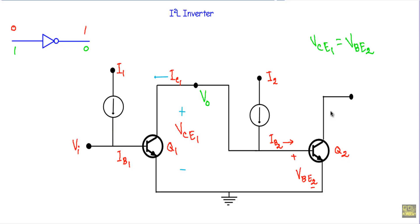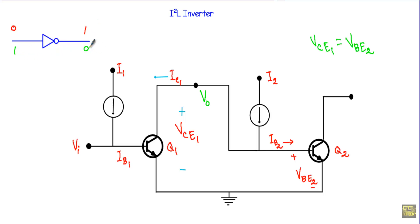In this video I will show you the operation of an I²L (integrated injection logic) inverter gate. If at the input I apply logic 0, at the output I will get logic 1. If at the input I apply logic 1, at the output I will get logic 0.